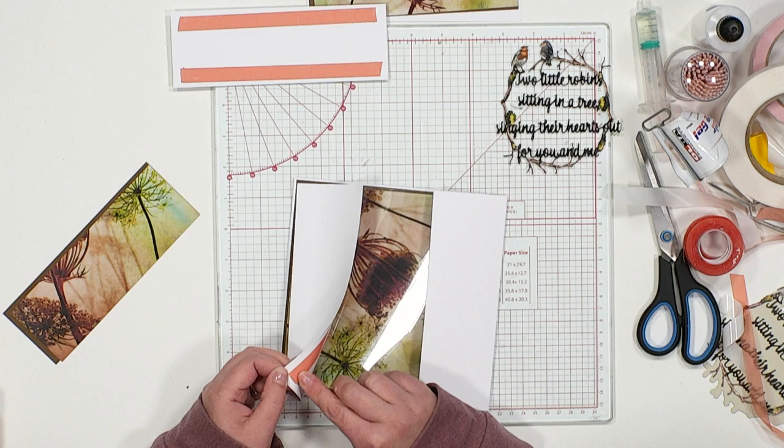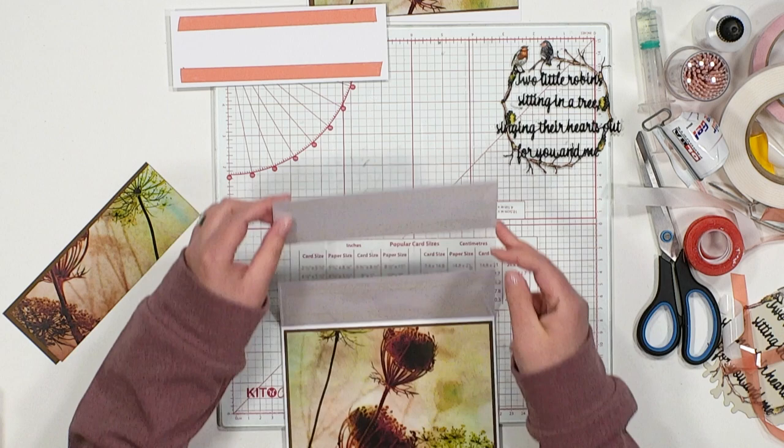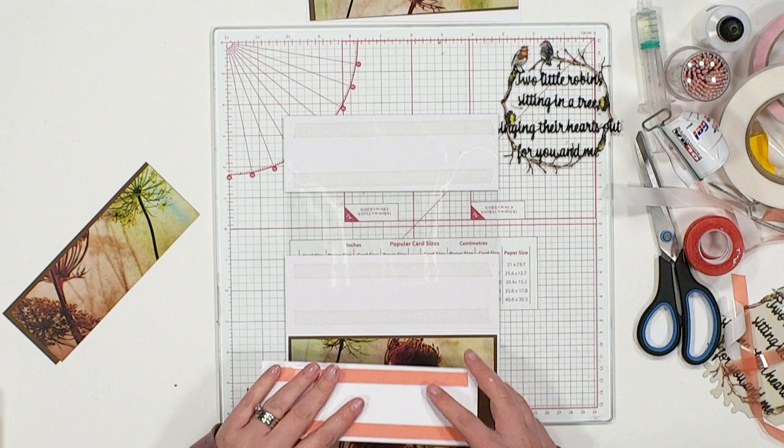So you've got basically the front of your card with a little cutaway to the center. Same thing again, just removing that carrier sheet of the red liner tape just so we've got a nice strong adhesion for the acetate there.